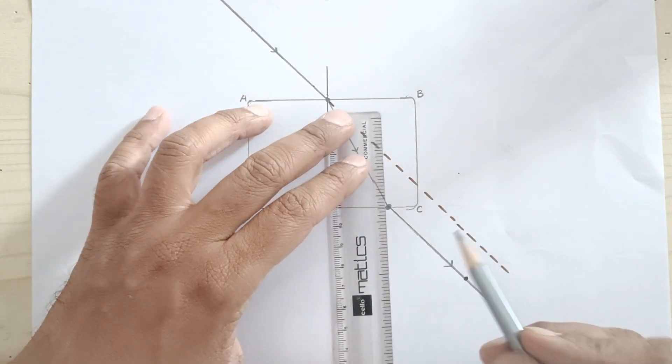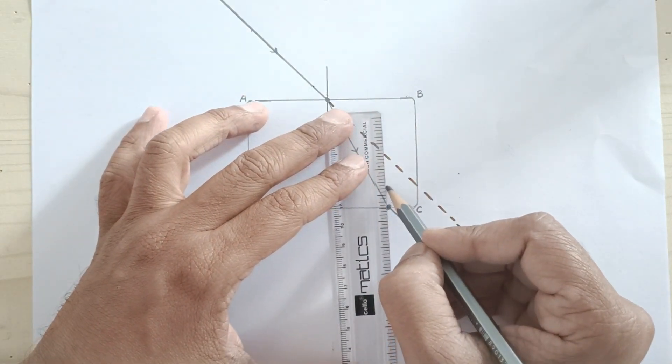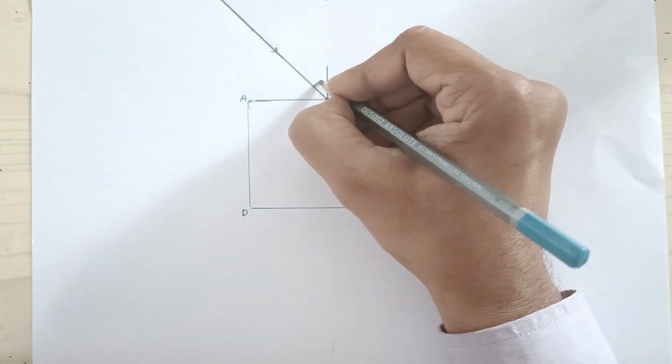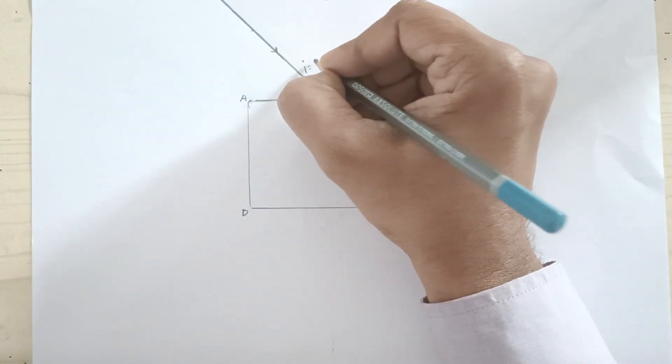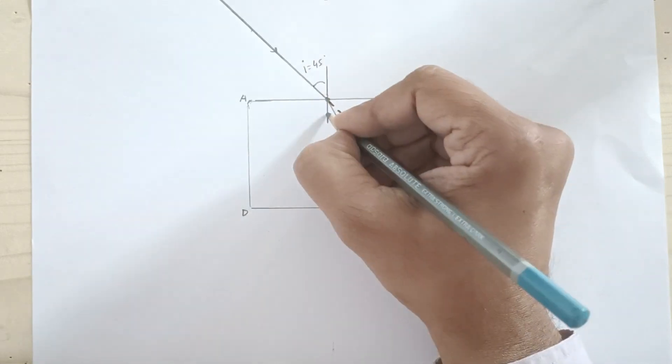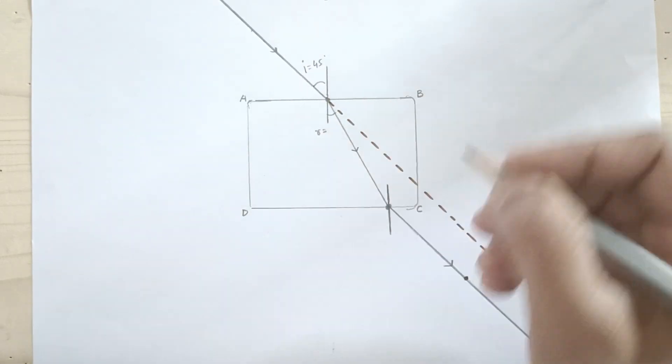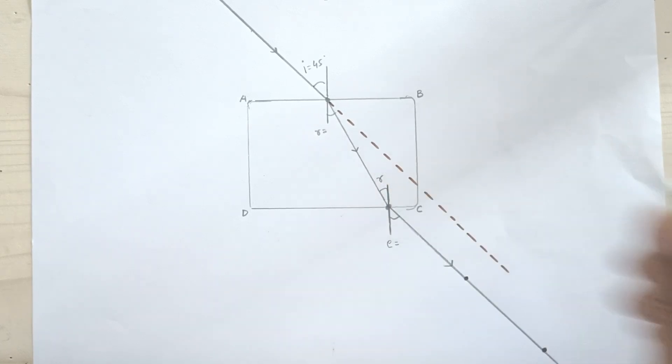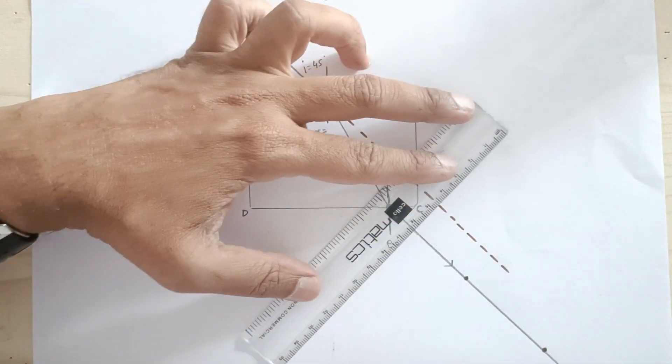Draw the normal perpendicular to the surface. Angle of incidence is 45 degrees. This is angle of refraction. This is angle of emergence. This is angle of incidence for surface CD which is equal to R.